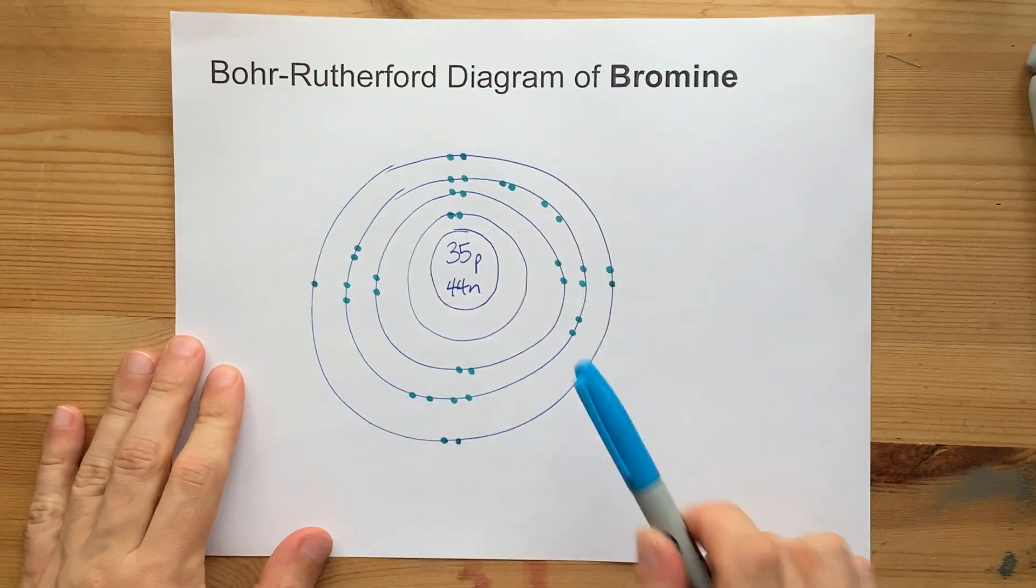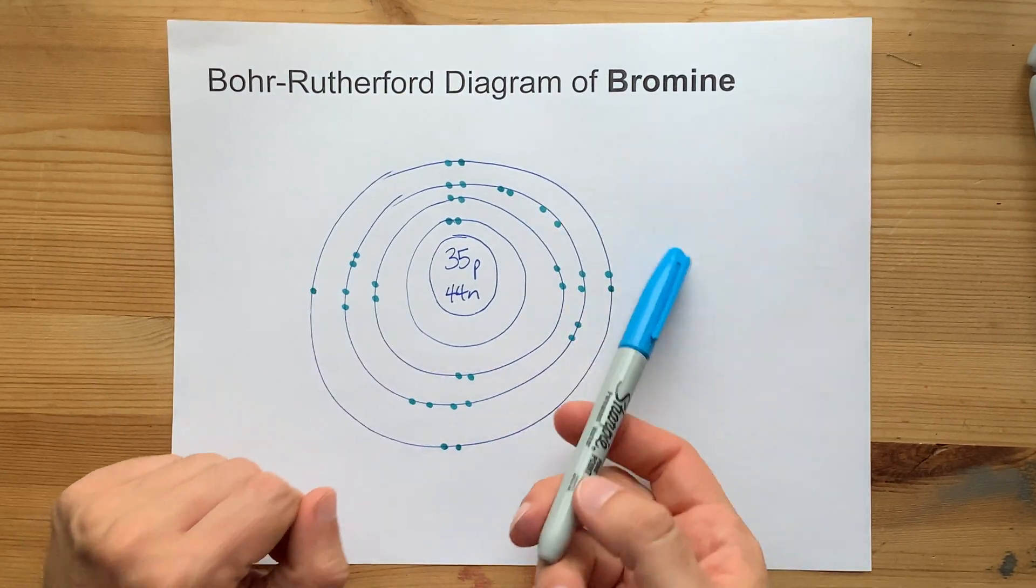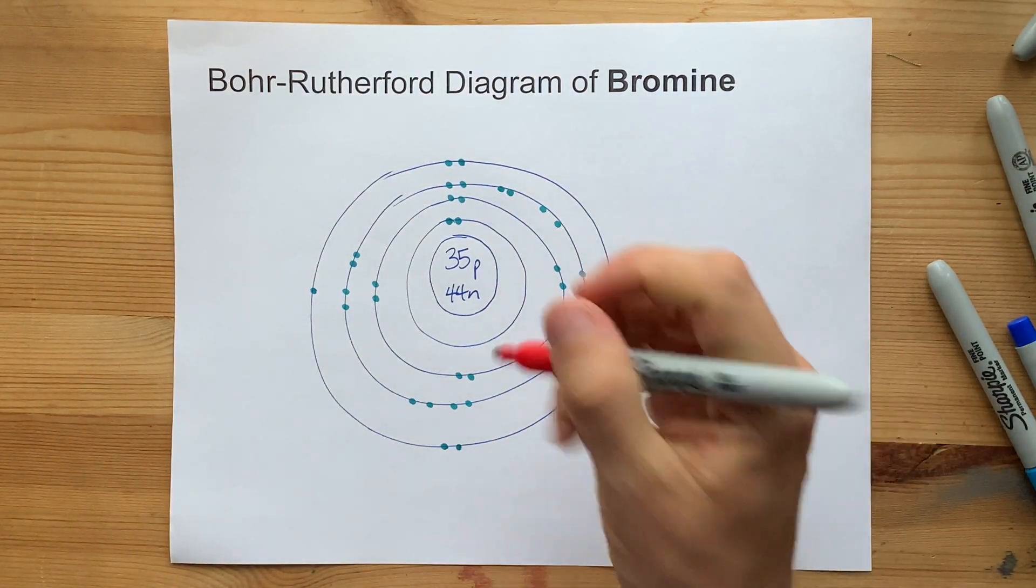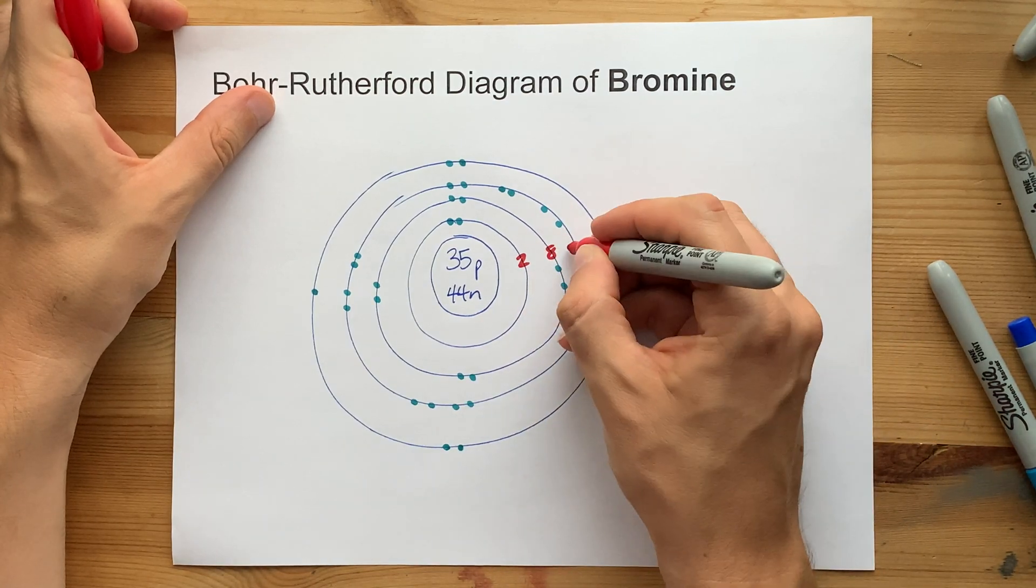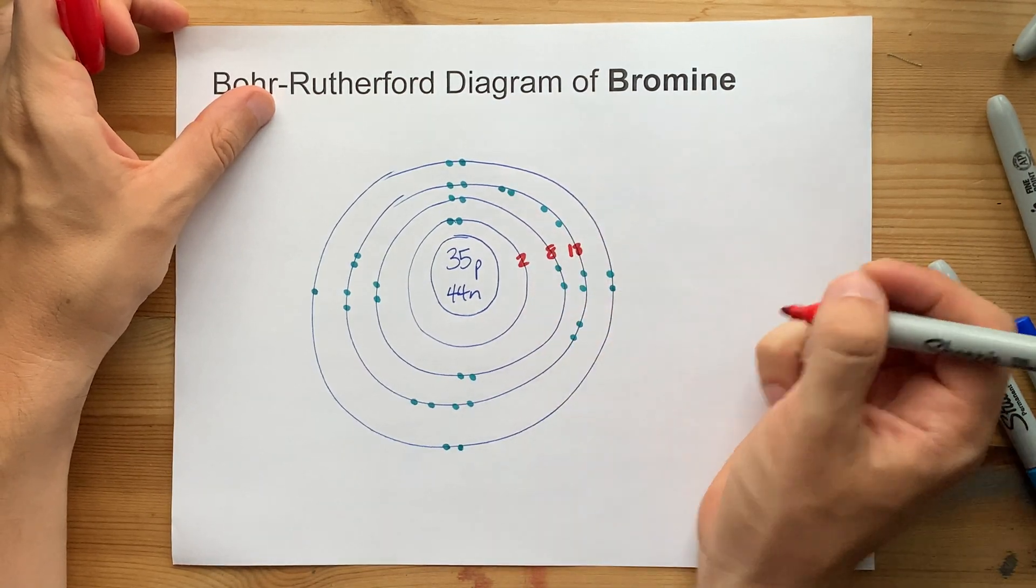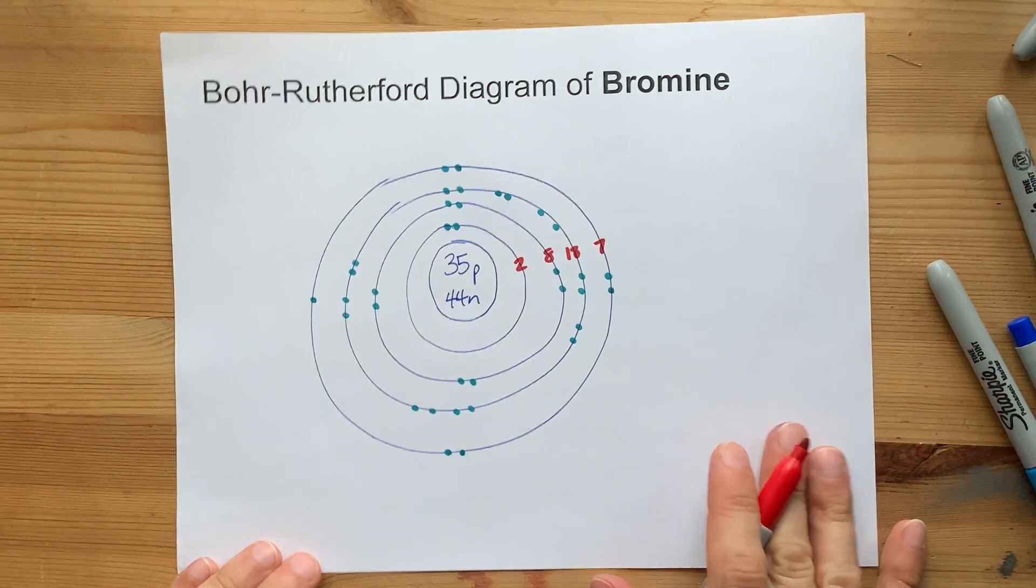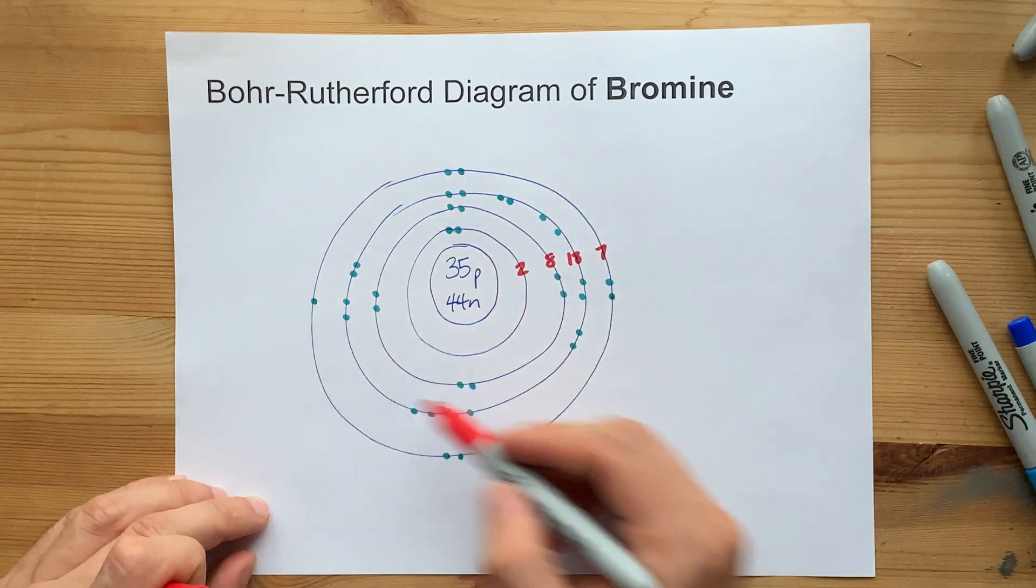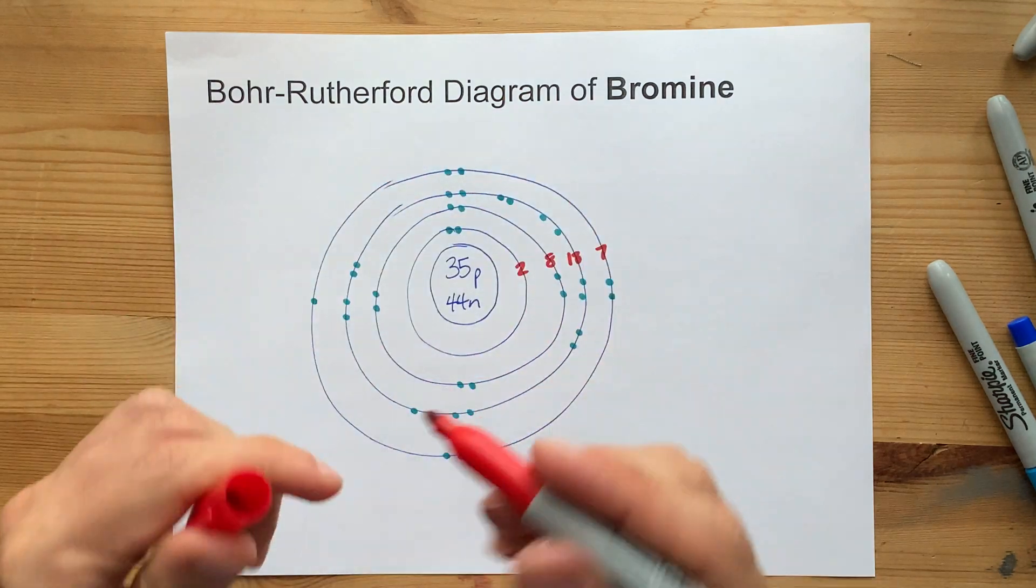If you count them up, this should have 35 dots total for 35 electrons. But what matters here in my book is that you have 2 in the first shell, 8 in the second, 18 in the third, and I guess 7 in the fourth. This is like the electron arrangement of bromine. The Bohr-Rutherford diagram is what you get when you put them all as dots.